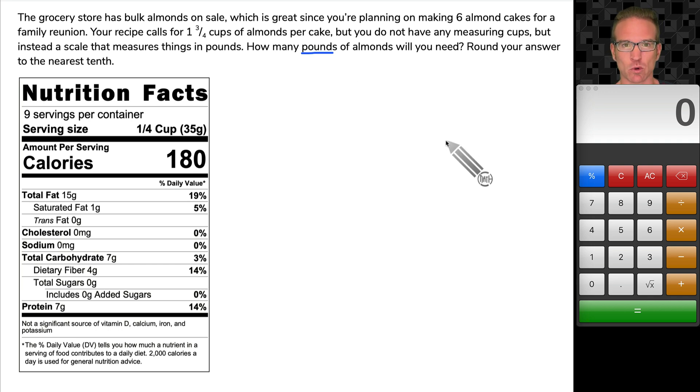So when I see this problem, if I was working it out by myself, I would not do dimensional analysis. I want to show you how I would do it if I was by myself first. We need six cakes and each cake needs one and three fourths cups of almonds.